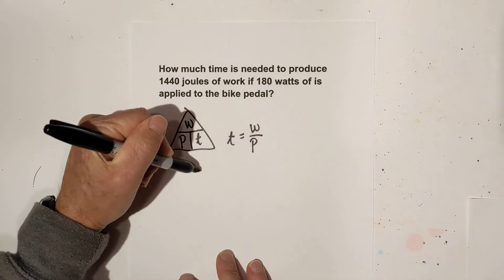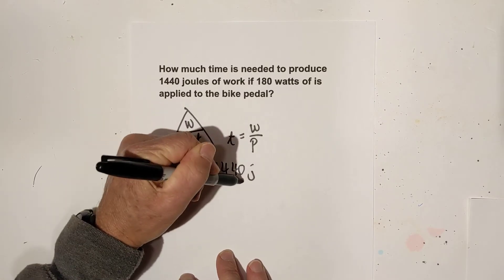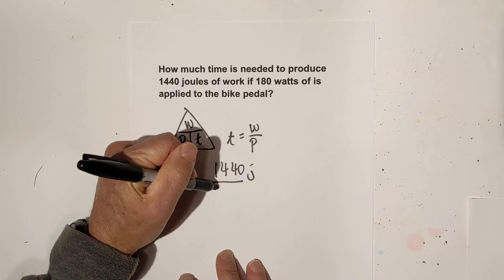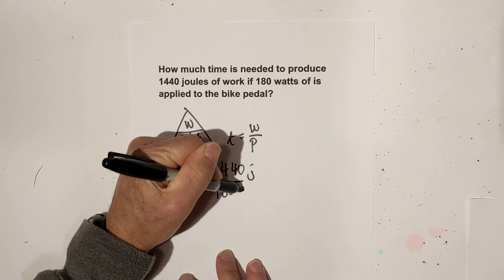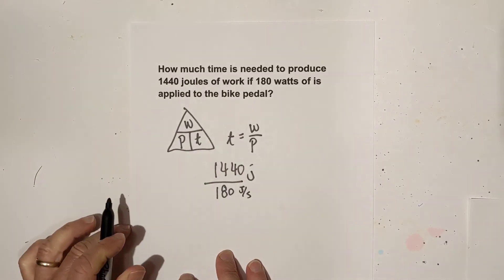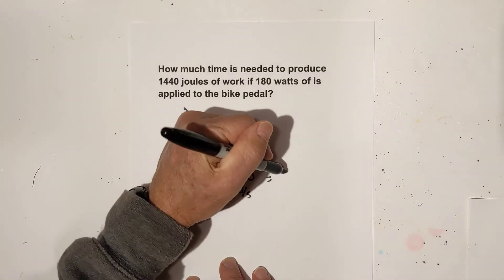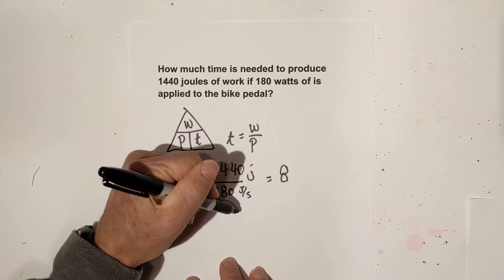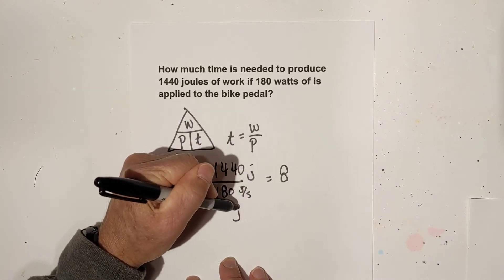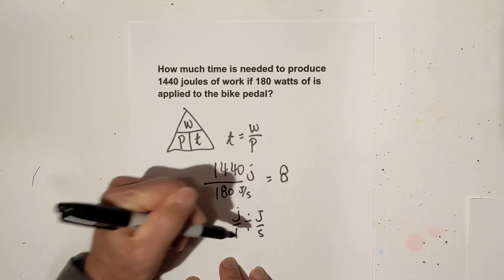We have 1,440 joules of work and our power is 180 watts. Now I'm going to write the 180 watts as joules over seconds. So now when we divide 1,440 by 180 watts, that gives us 8. Now let's look at the units of measure.